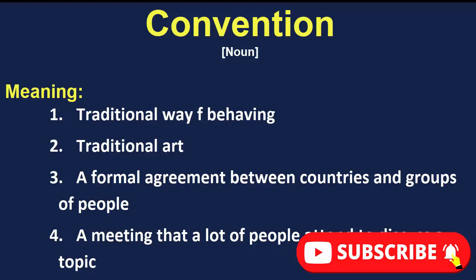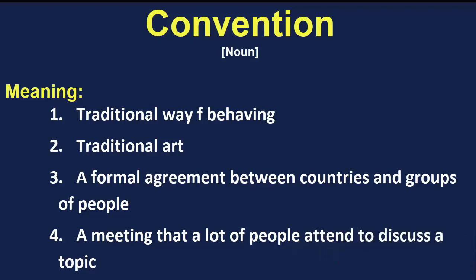The second meaning is traditional art. Every art form has a traditional way, a style, a method — like painting, writing, architecture, acting, and music. Every art form has a traditional way to do it. That traditional method or style is called a convention.